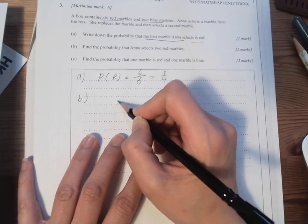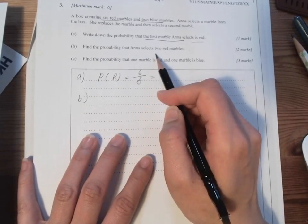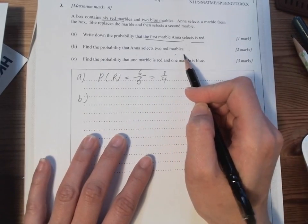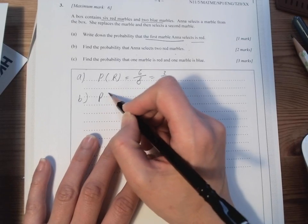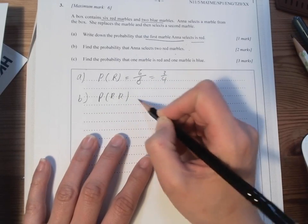And then for the second one, we would like to find out the probability to select two red marbles. Because it's replacement, so we do not have to change the denominator.